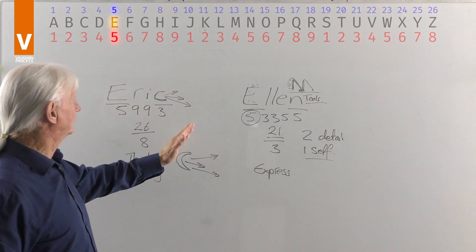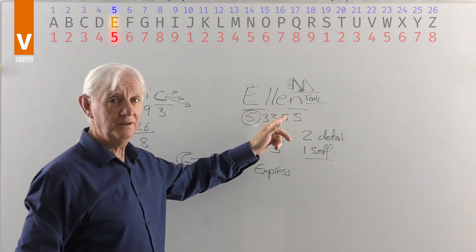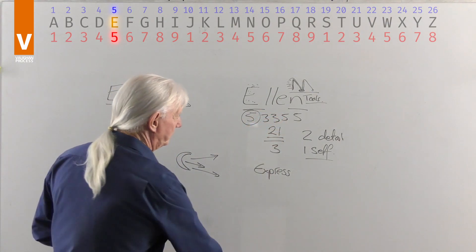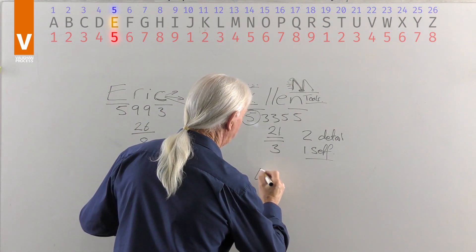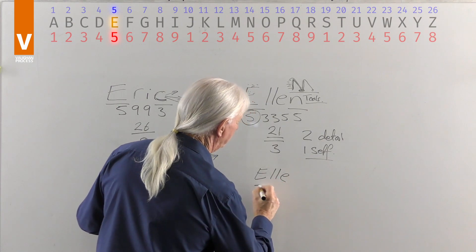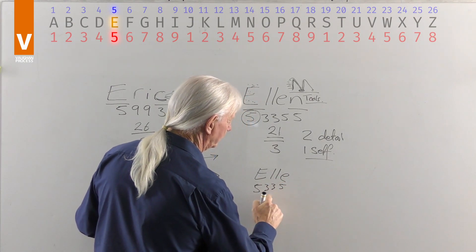So shortening down Eric is a bit difficult. Eric? I don't think so, but she might get Ellie. Now Ellie would be slightly different. Let's just put that up there for a bit of fun. E, L, L, E. 5, 3, 3, and 5. 5, 10, 16.